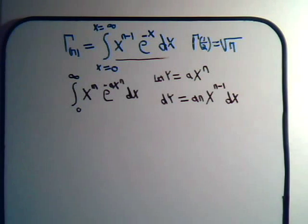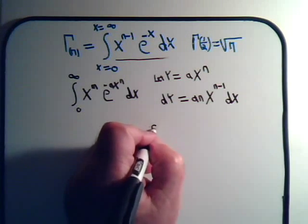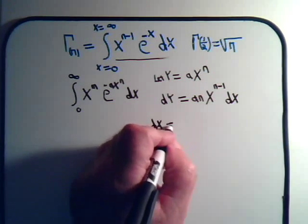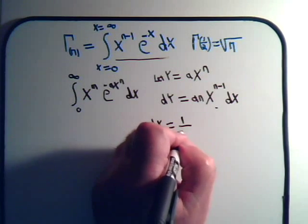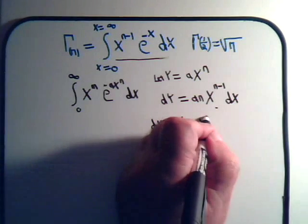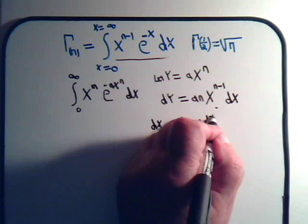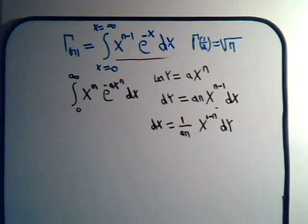So we've got to get the dx here expressed in terms of dy. So we divide both sides of the equation, and we'll have dx equal 1 over an times x to the 1 minus n times dy.